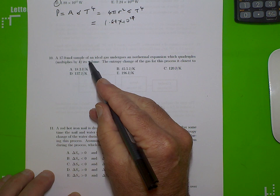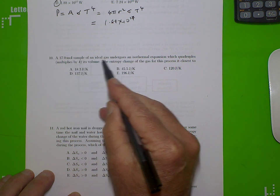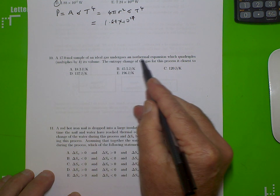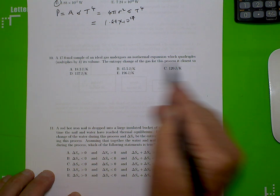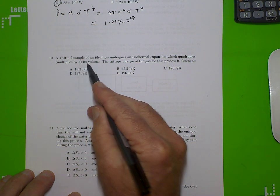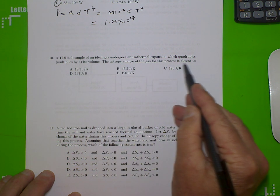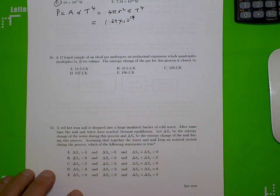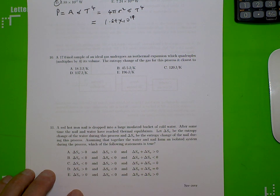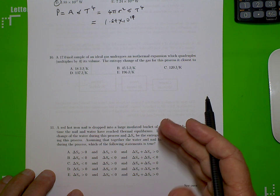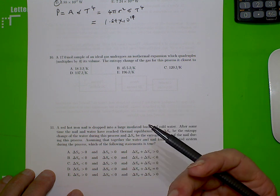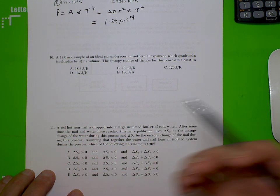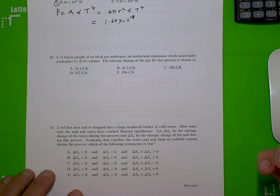A 17 mole sample of an ideal gas undergoes an isothermal expansion which quadruples, multiplies by 4, its volume. The entropy change of the gas for this process is closest to. Okay. So it's isothermal. So all of the heat is supplied at the same temperature and the volume goes up by a factor of 4.